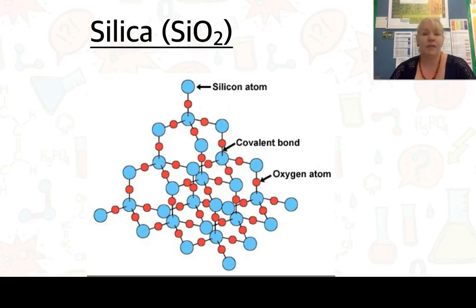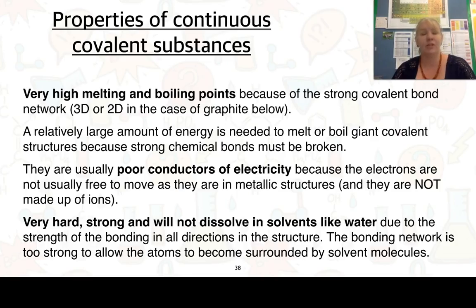We also have another example of a continuous covalent network which is silica. We have silicon represented here as blue and oxygen represented as red and you can see the covalence between them. Now these structures are very different to the molecular structures that we were looking at previously and so therefore they have different properties.